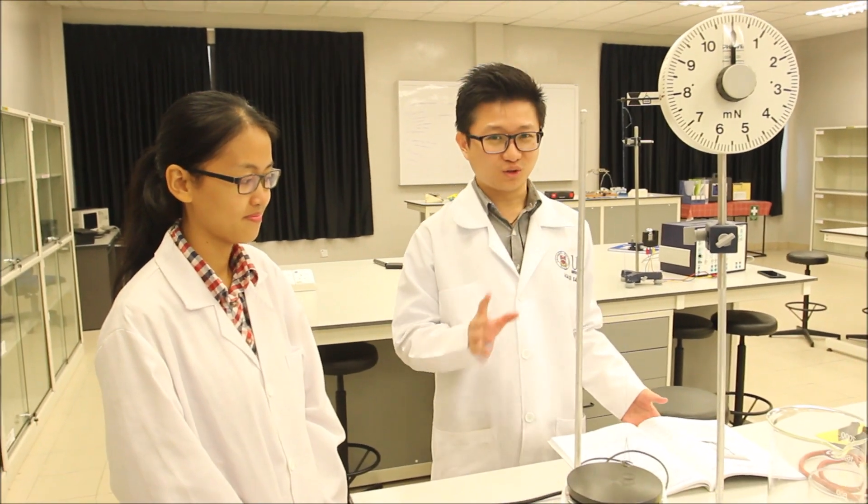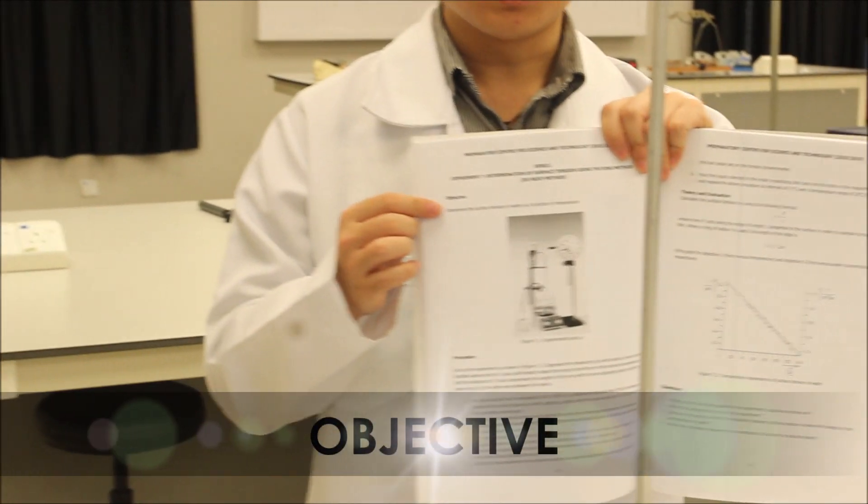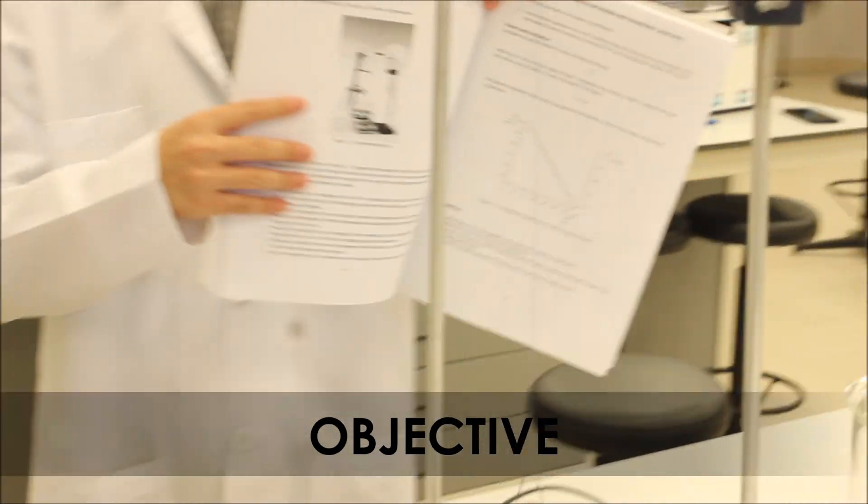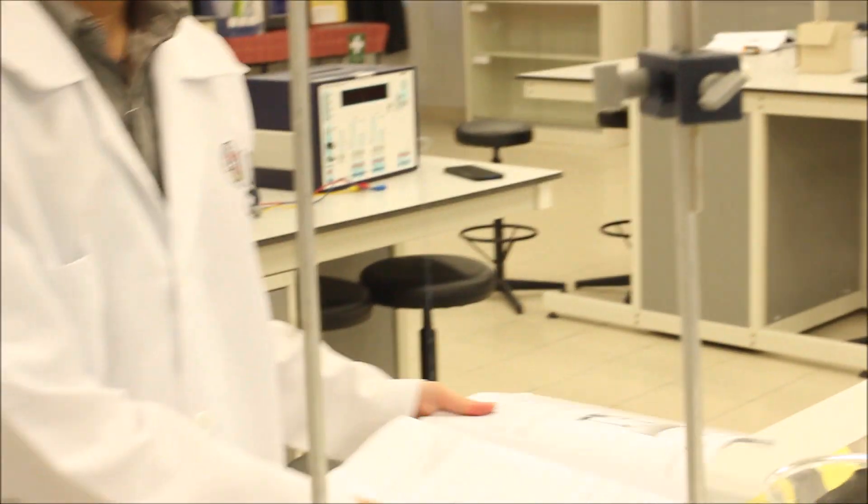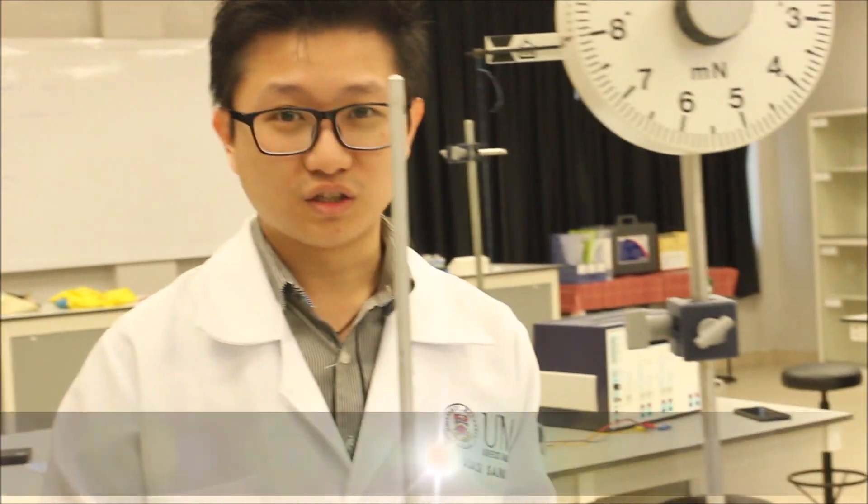Before we go on to our experiment, the first thing that you need to know is the objective of the experiment. If you look in your lab manual, it clearly states the objective is to determine the surface tension of water. Before you begin any experiment, knowing your objective, always get to know what are the apparatus and materials for this experiment.